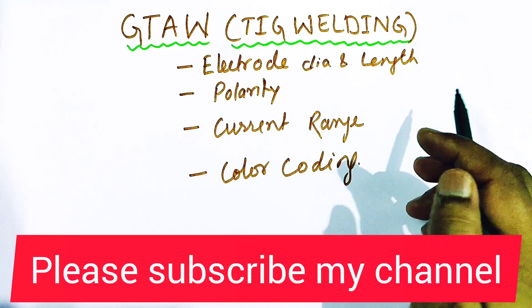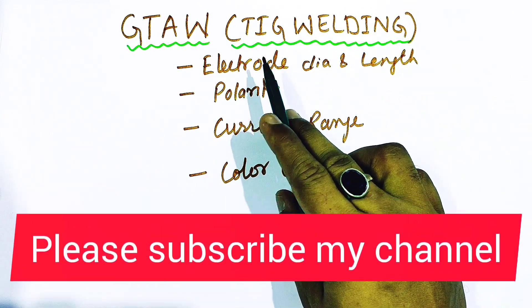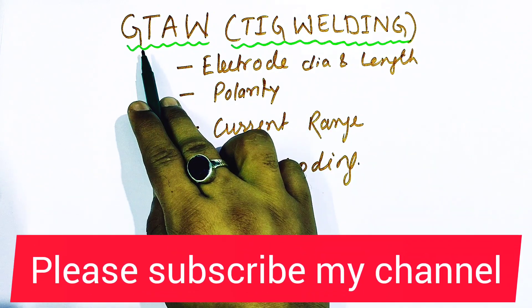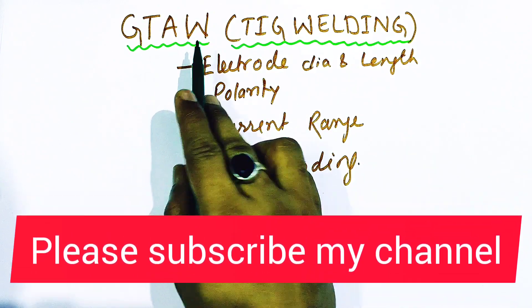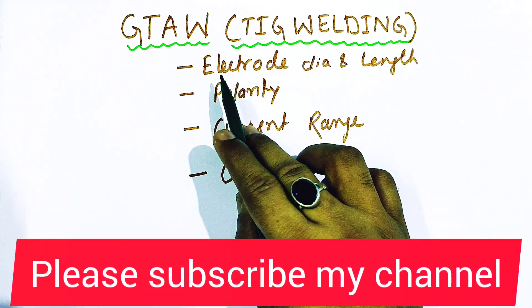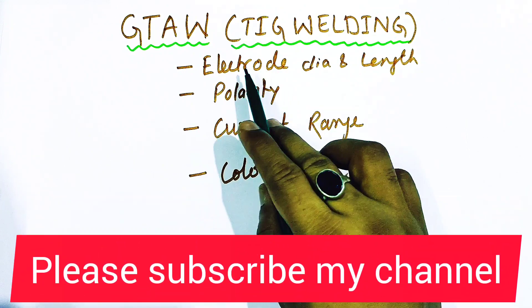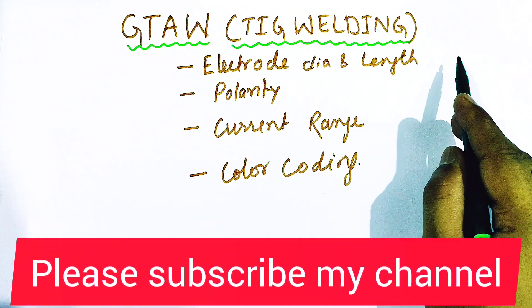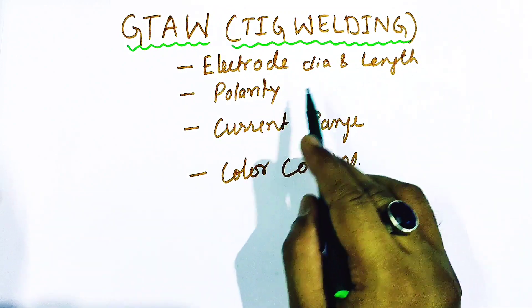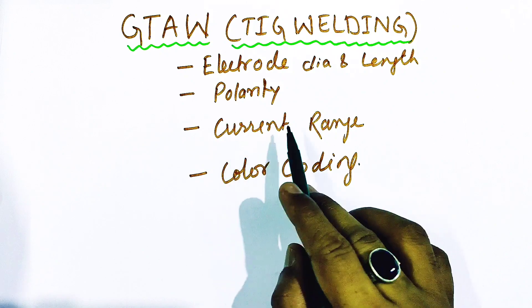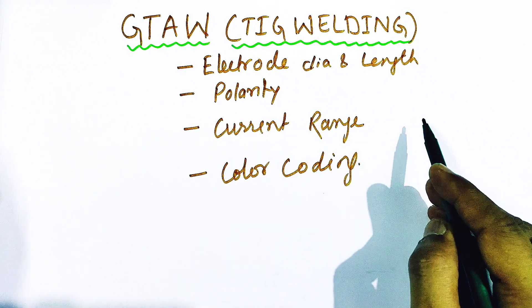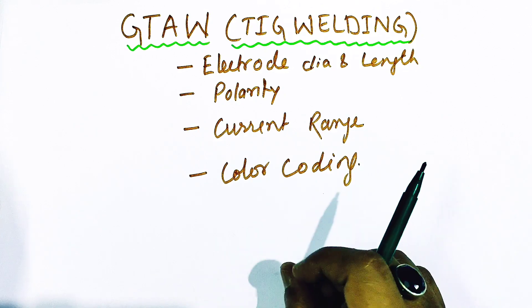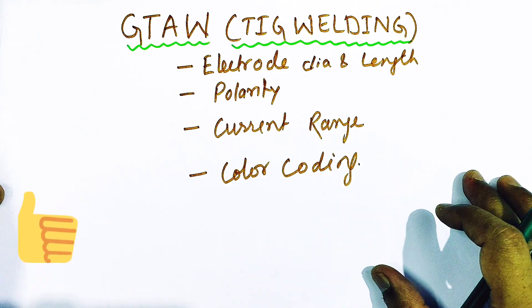Hello friends, welcome to my channel and our today's topic is about TIG welding electrodes. TIG welding is also known as GTAW, that is gas tungsten arc welding. In today's video we'll learn about the different electrode diameters and lengths as per given in the code, the polarity choices, and about the current range which is to be used during the welding. Finally, we'll learn about the color coding of the electrodes. So let's start the topic.